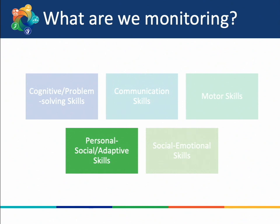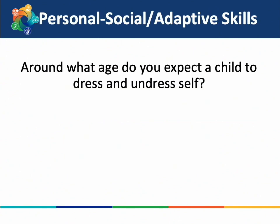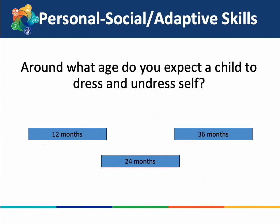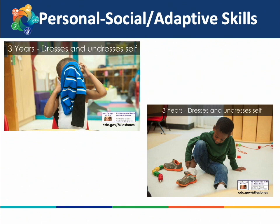Jumping back to our game, we are on personal social adaptive skills — skills that a child learns to help them take part in day-to-day activities. Around what age do you expect a child to dress and undress themselves? Our options are 12 months, 24 months, or 36 months. The answer is 36 months, or 3 years old. Here you can see a young boy putting on his shirt and shoes.